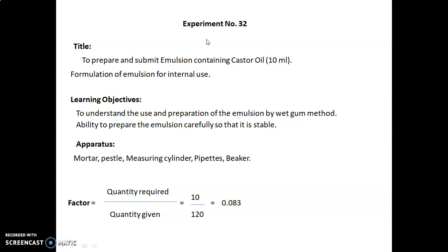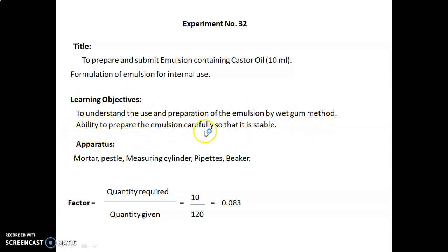In the next session we will see Experiment Number 32. The title is: to prepare and submit an emulsion containing castor oil 10 ml — formulation of emulsion for internal use. The learning objectives are to understand the use and preparation of emulsion by the wet gum method, and the ability to prepare the emulsion carefully so that it is stable. Apparatus required: mortar, pestle, measuring cylinder, pipettes, and beaker.